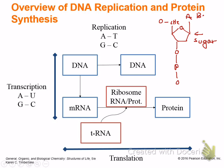This is the base, and this is the phosphate. A lot of books will just write P for inorganic phosphate. That structure just repeats over and over again. So we're looking at A, T, G, and C, and those are used in replication — that's what we talked about last time, where the helicase comes in and makes the replication fork.